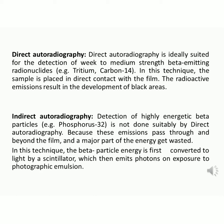In direct autoradiography, detection of highly energetic beta particles, for example phosphorus-32, is not done suitably, because these emissions pass through and beyond the film and a major part of the energy gets wasted. In this technique, the beta-particle energy is first converted to light by a scintillator, which then emits photons on exposure to photographic emulsion.